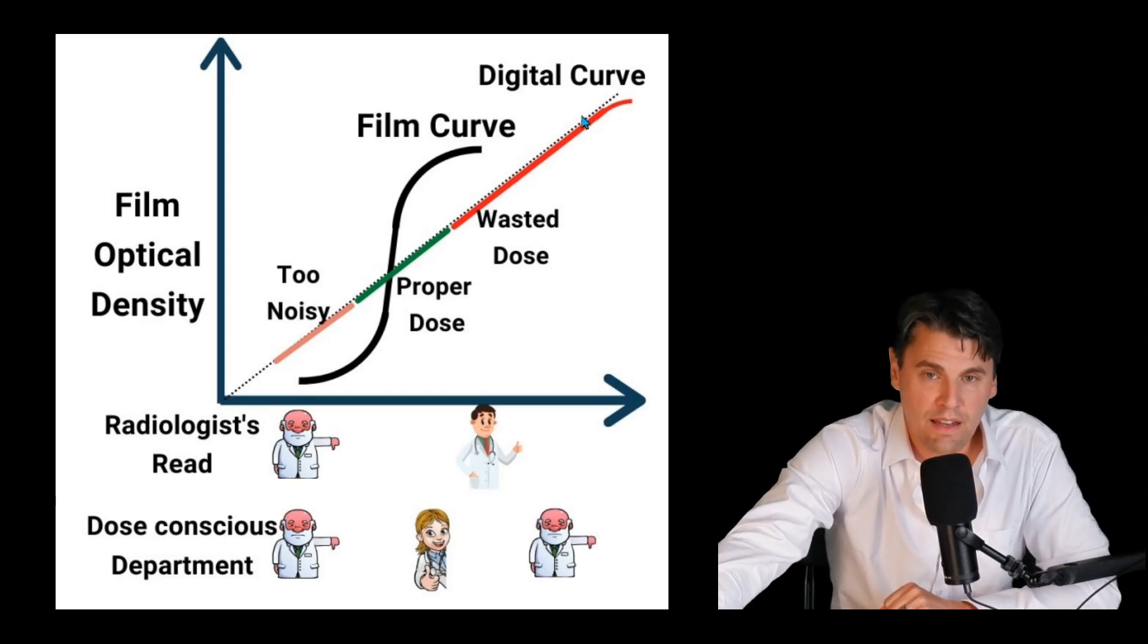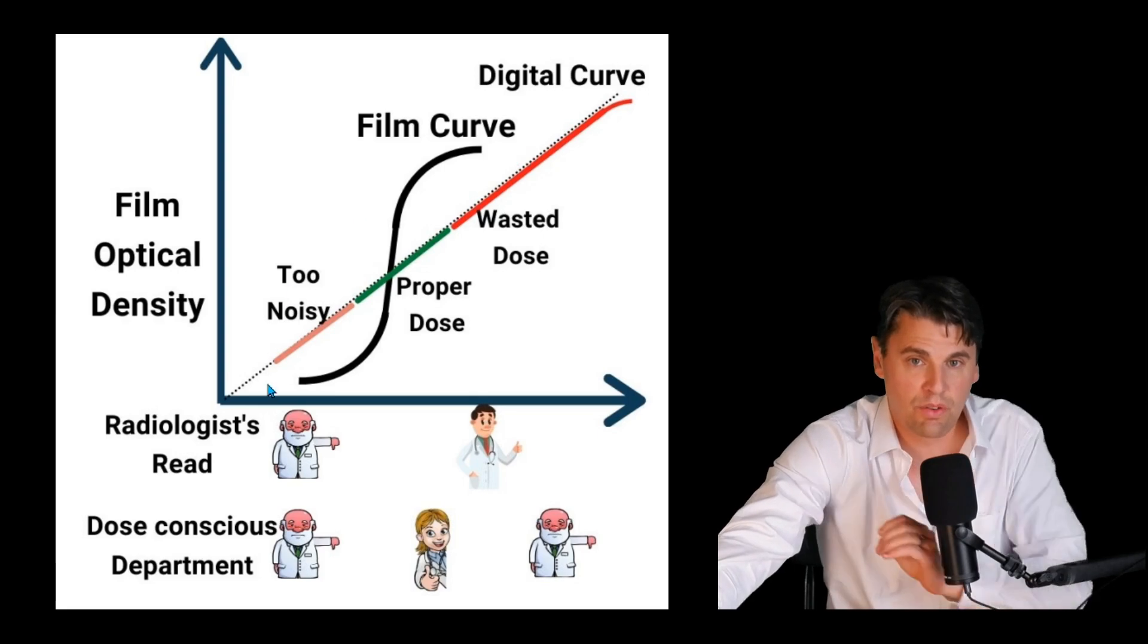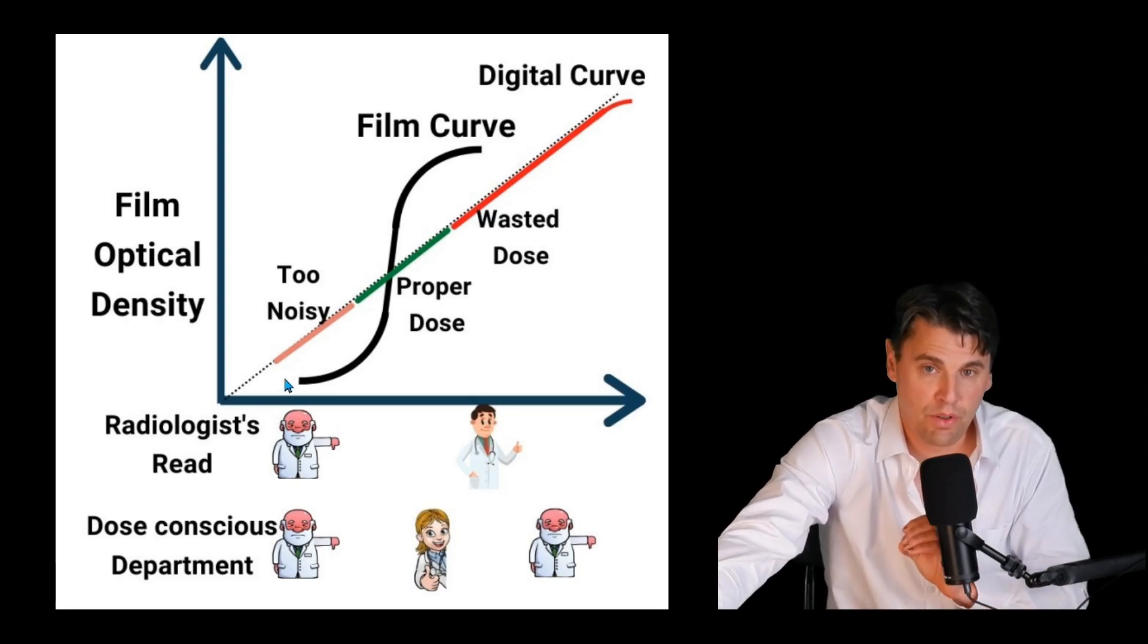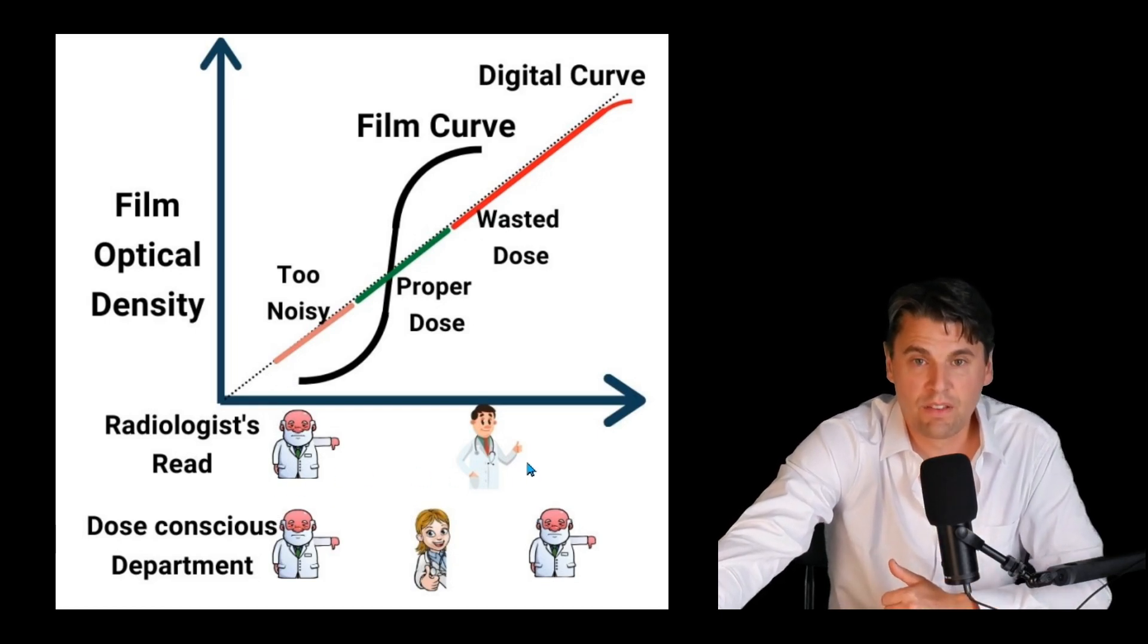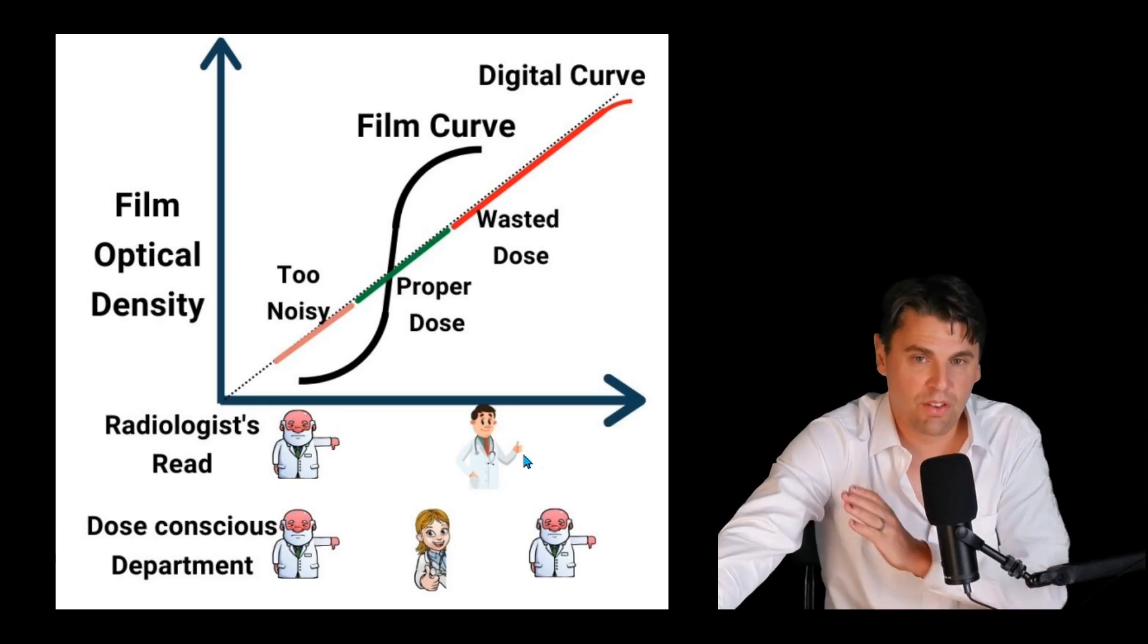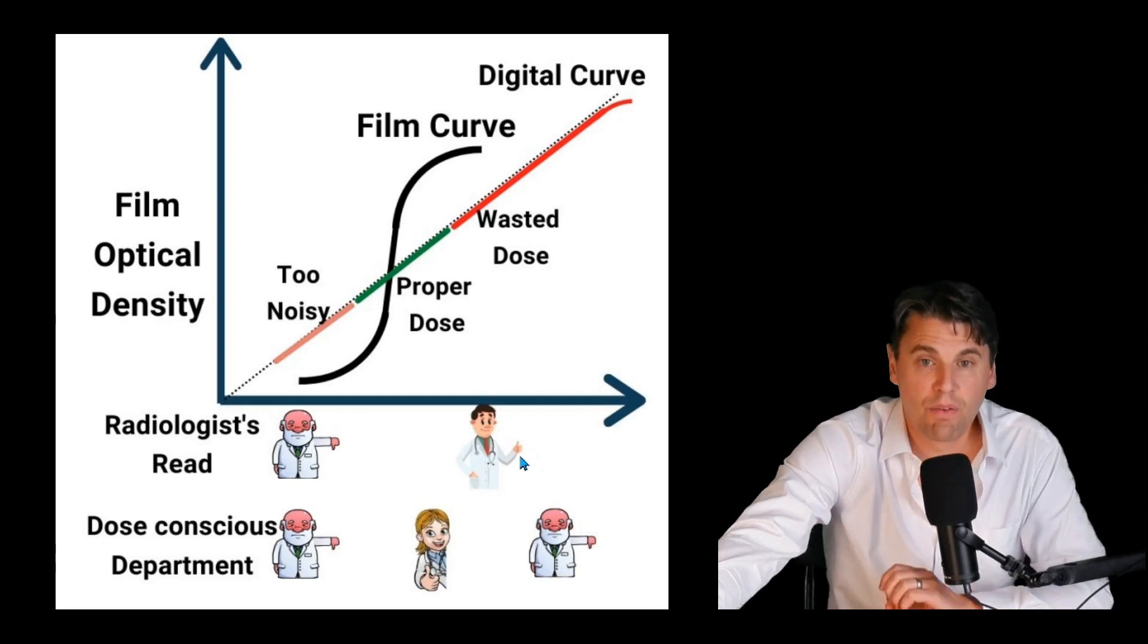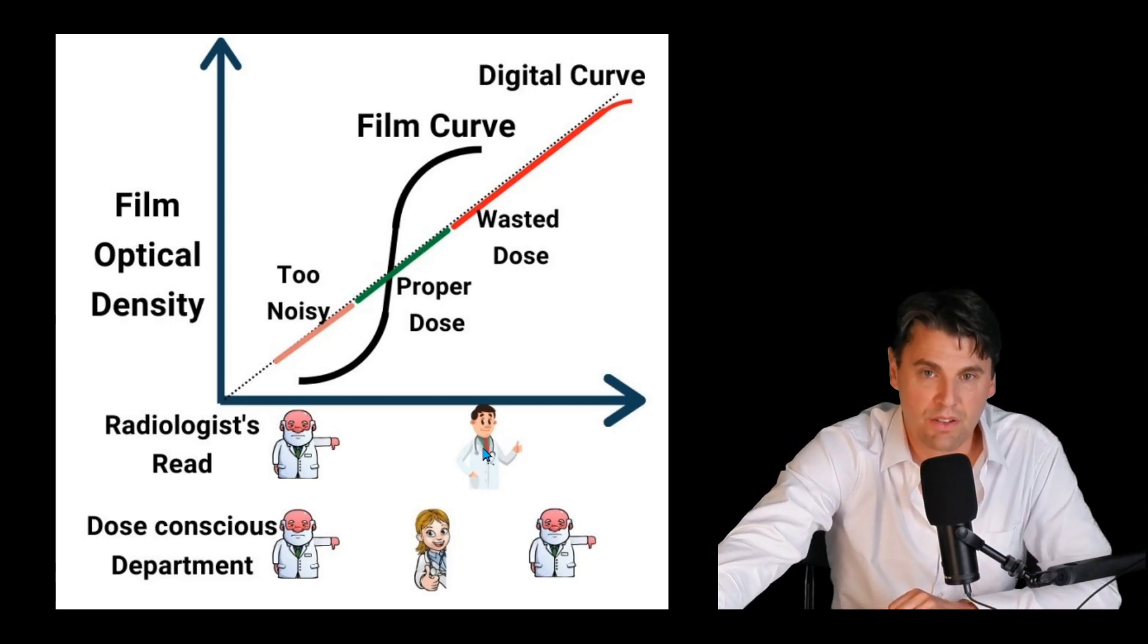We call this linear because it's basically just a line. It means we have a linear relationship between the actual intensity that we're measuring at the image receptor and the dose that was imparted at that image receptor or the exposure at the image receptor. This nice straight line is great because you can actually make good images at higher doses or lower doses.